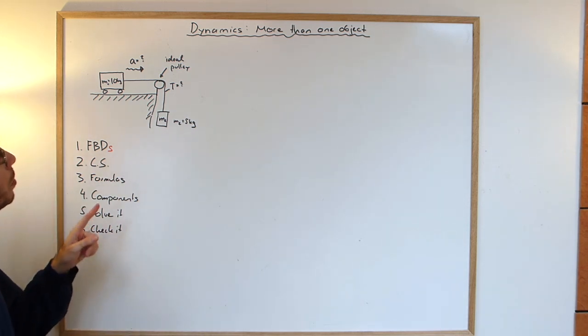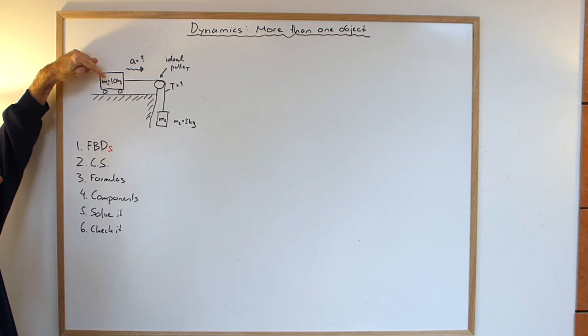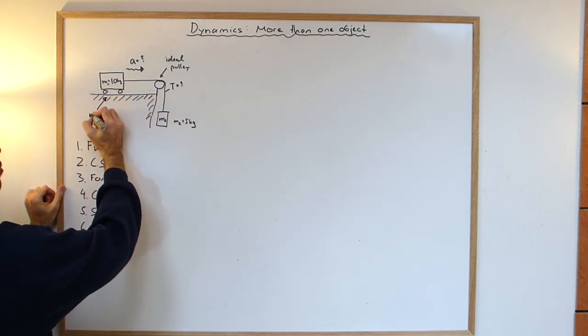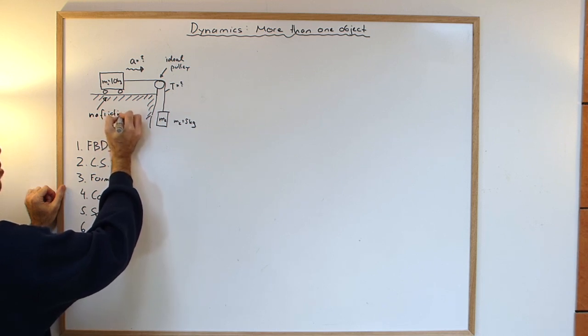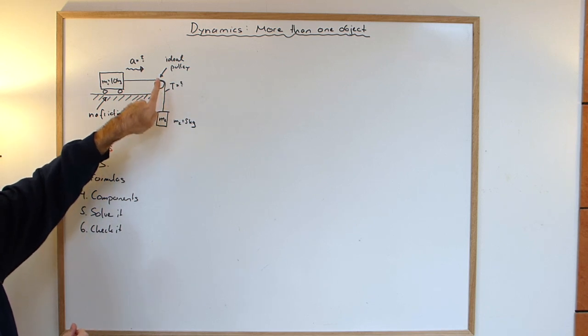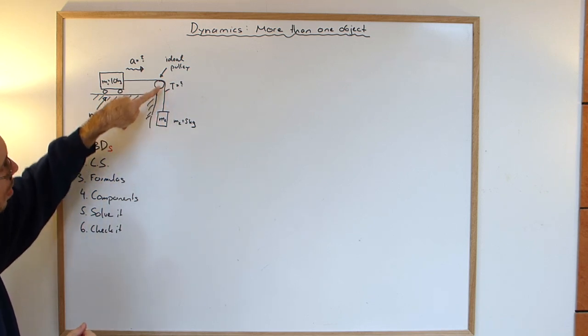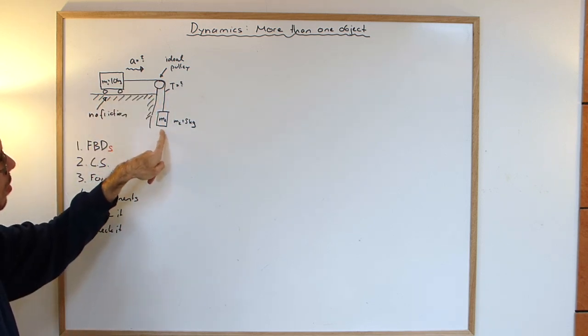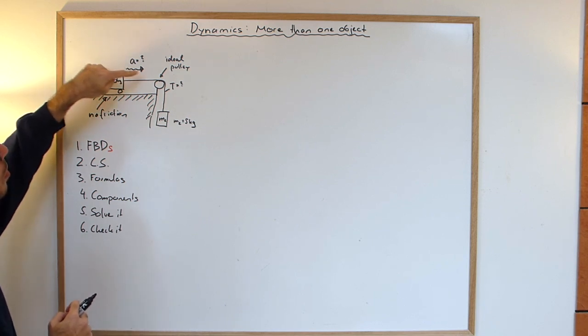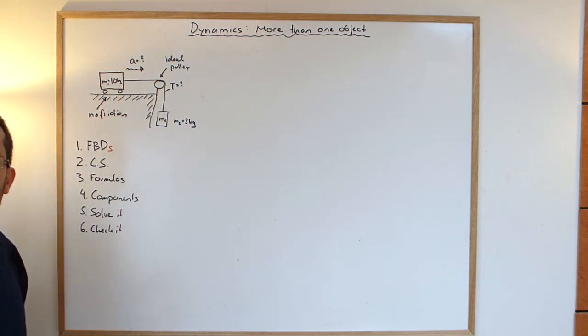So the problem I want to be looking at is we have a box that is on wheels, so we're going to assume no friction. There is a cable that goes over an ideal pulley, also with no friction and no inertia, and then there is a weight that is suspended on the other side of the cable and we want to figure out what's the acceleration of the car and what's the tension in the cable.